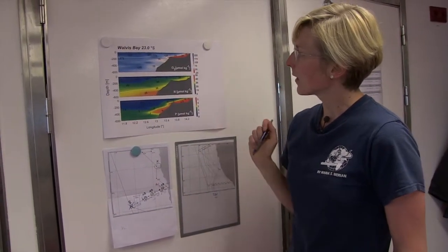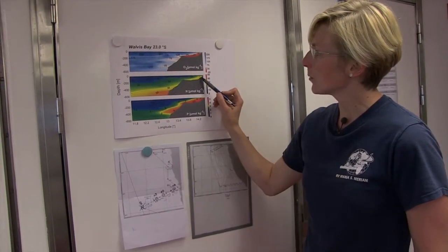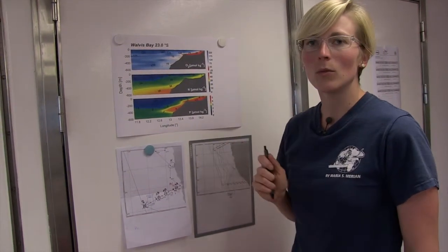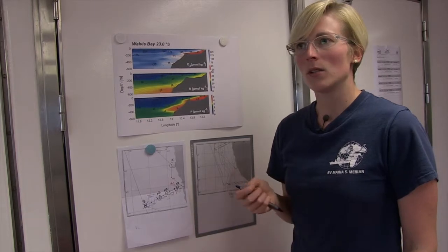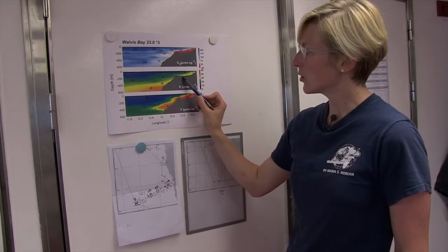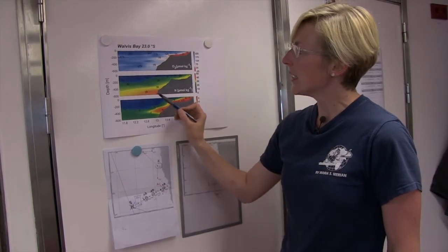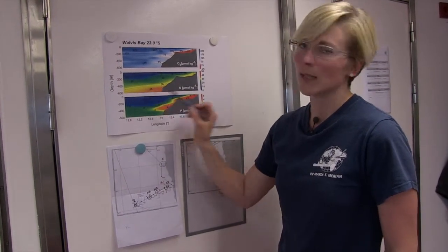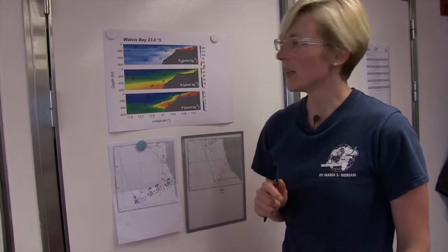What happens in these oxygen minimum zones on the shelf here is that nitrogen is lost from the water column through processes such as denitrification and anammox. This means that we measure moderate nitrogen concentrations above the shelf, but the maximum values are usually away from the coast and at greater depth.